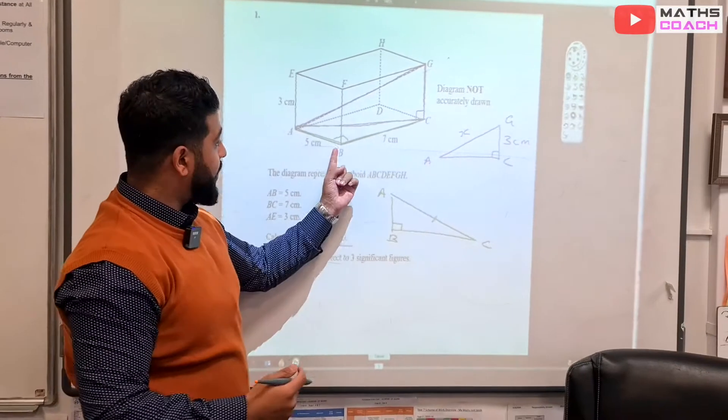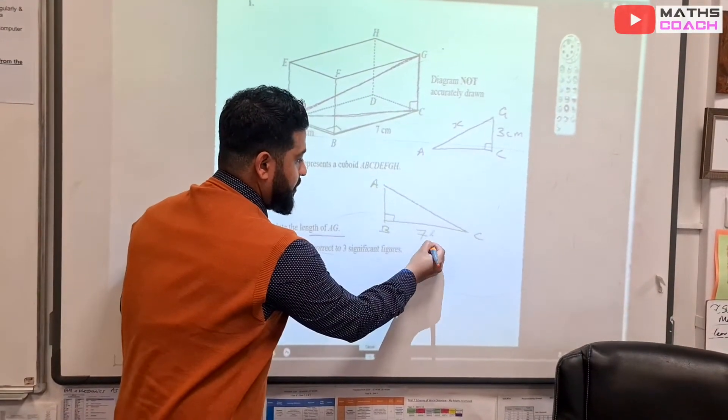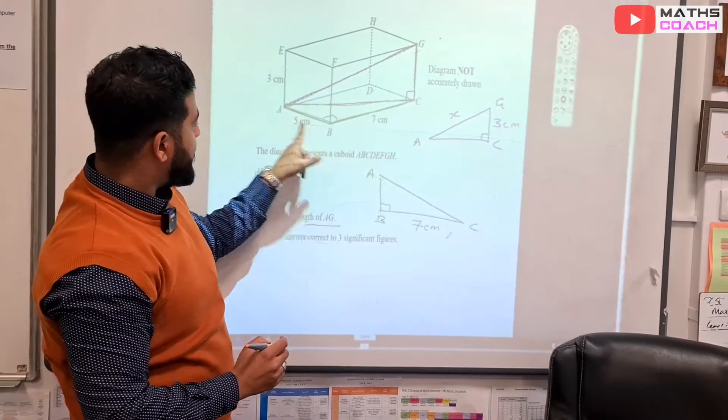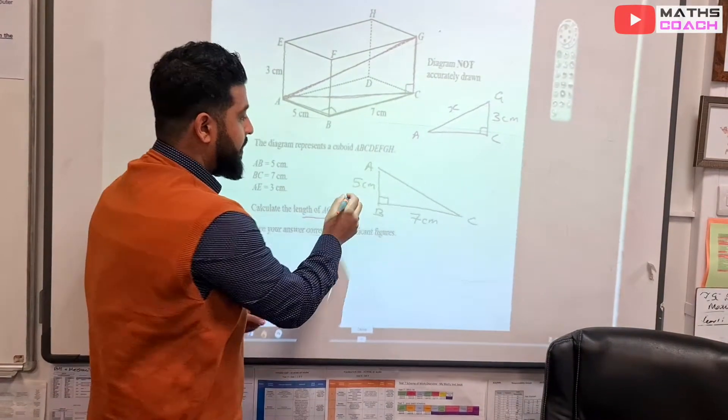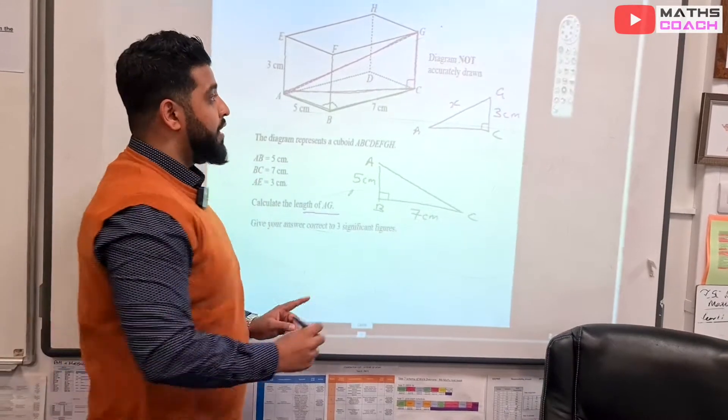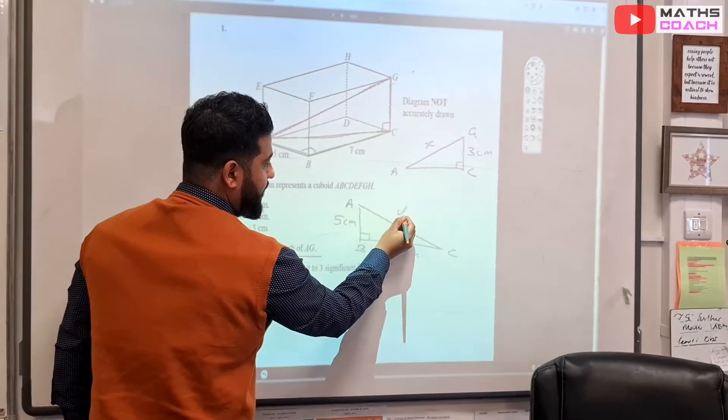Now, on this right angle triangle, I know B to C is 7 centimeters, so 7 centimeters there. I know that A to B is 5 centimeters, so 5 centimeters there. I can now find A to C. So A to C, I'll give it a different letter because I've already used X earlier. So I'll give it a Y.